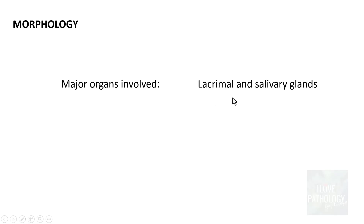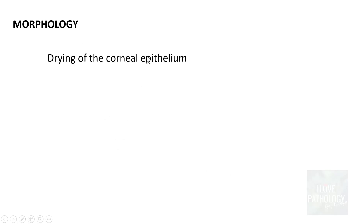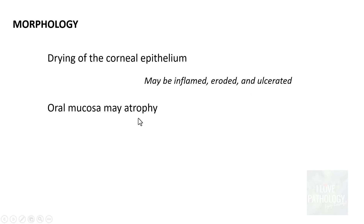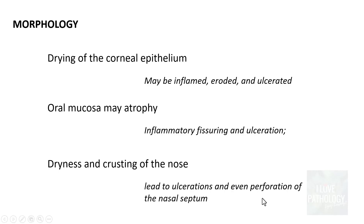Morphologically, the major organs involved are the lacrimal and salivary glands, though other glands can also be involved, particularly those lining the respiratory and gastrointestinal tracts as well as the vagina. Features include drying of the corneal epithelium, which may be inflamed, eroded, or ulcerated; atrophy of the oral mucosa leading to inflammatory fissuring and ulceration; and dryness and crusting of the nose leading to ulcerations and even perforation of the nasal septum.